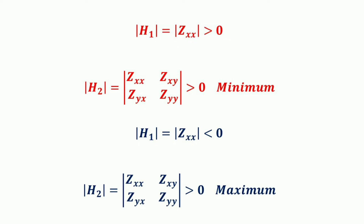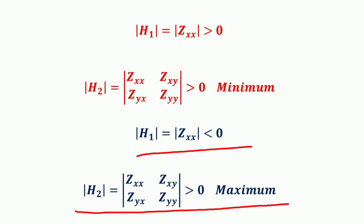If the first principal minor h1 = z_xx is less than zero and the second principal minor h2 is greater than zero, then the second order condition for maximum is met. That is, when h1 < 0 and h2 > 0, the Hessian fulfills the second order condition for maximum.